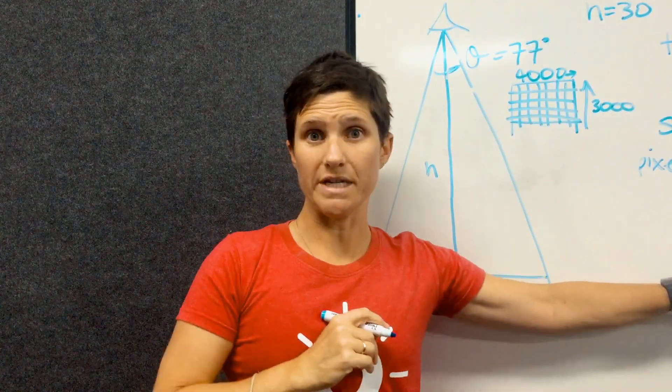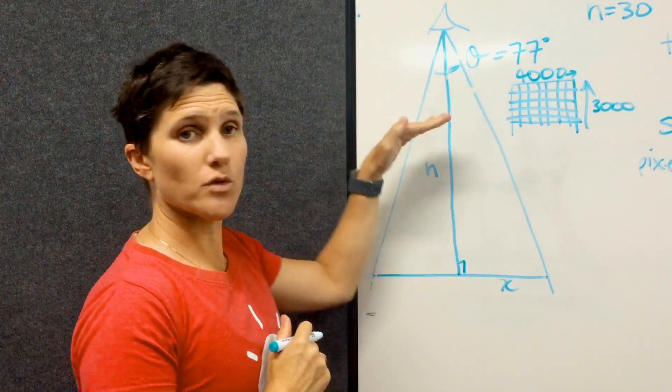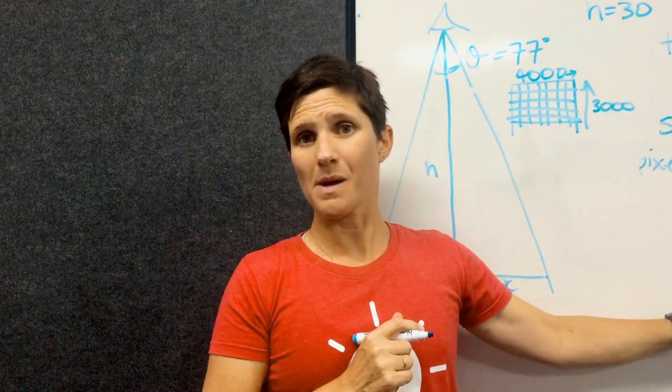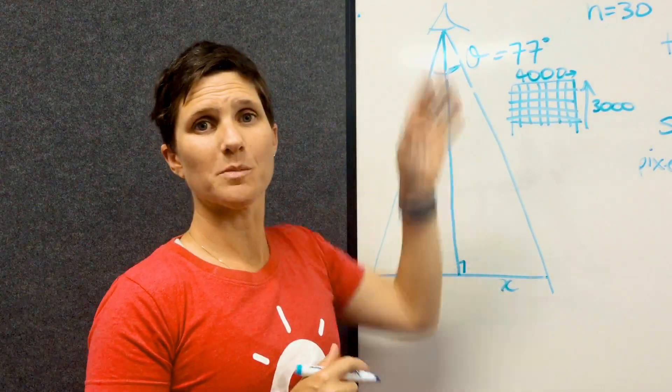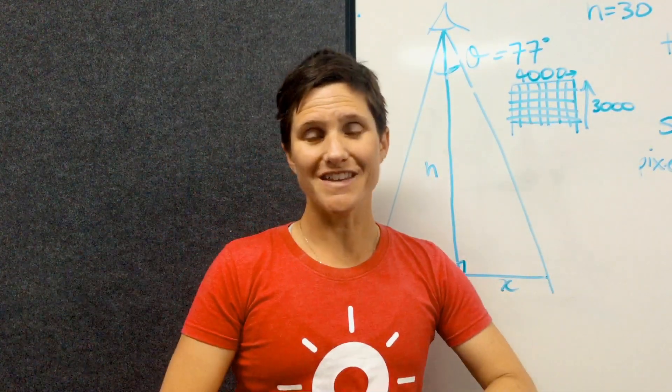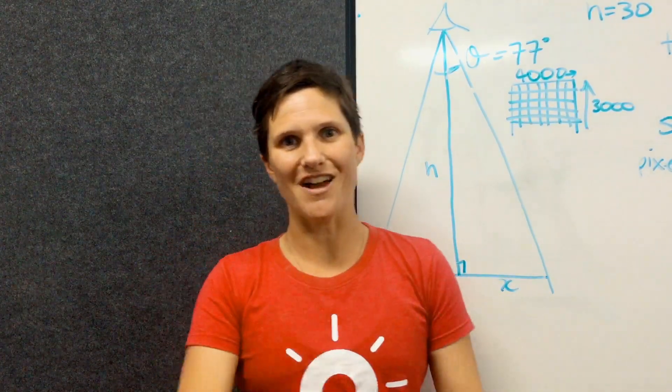So if you need more detail than that, you're going to fly your drone lower to the ground. If you don't need quite so much detail, you can fly it up a little bit higher. So there you go, there's high school trigonometry actually applied in real life.